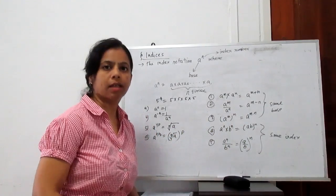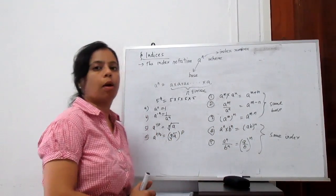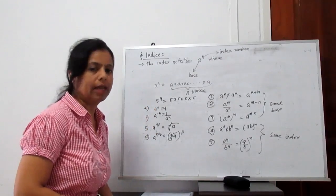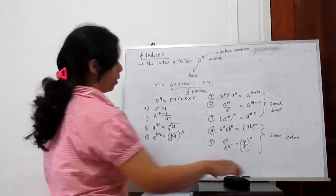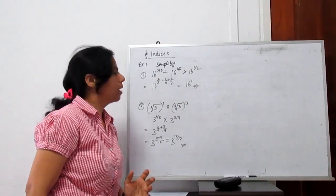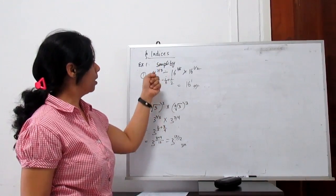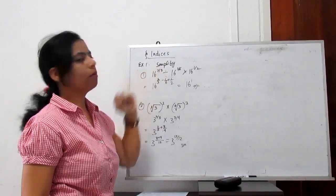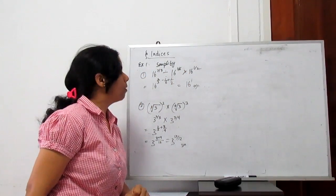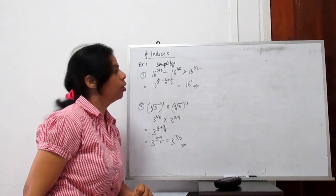Let's proceed with some examples so you have a better understanding of how to solve indices problems. We start with initial problems. Simplify the equation: 16 to the power 2 by 3, divided by 16 to the power 1 by 6, times 16 to the power 1 by 2.